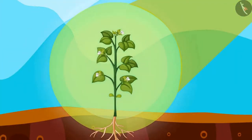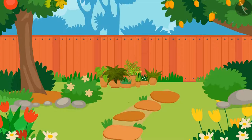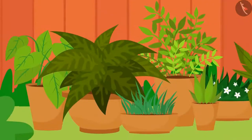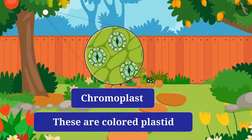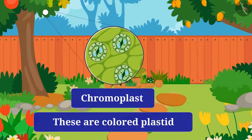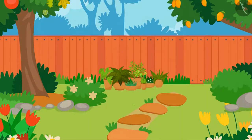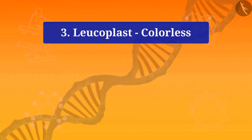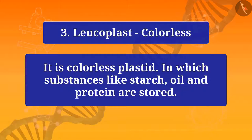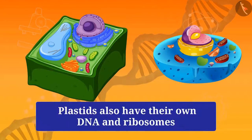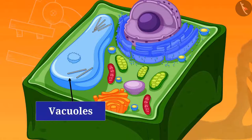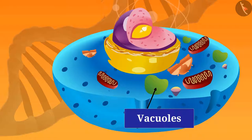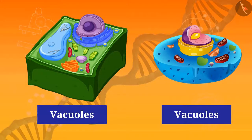Chromoplast are colored plastids that provide different colors to leaves, flowers, and fruits of a plant. Leukoplast are colorless plastids in which substances like starch, oil, and protein are stored. Plastids also have their own DNA and ribosomes, which help in the synthesis of protein and light.